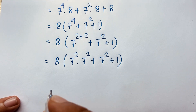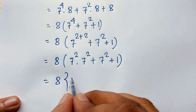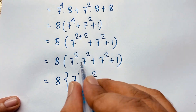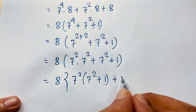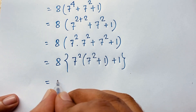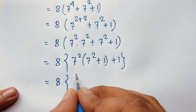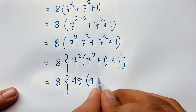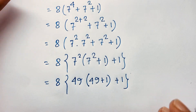Now 7 to the power 2 can be factored — dividing gives 1 — leaving 8 times 7 to the power 2 times (7 to the power 2 plus 1 plus 1). Since 7 to the power 2 equals 49, we have 8 times 49 times (49 plus 1 plus 1), solving this step by step.